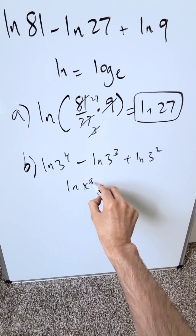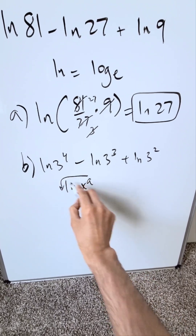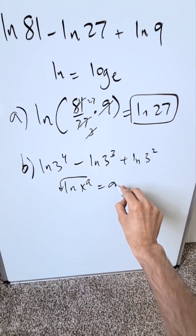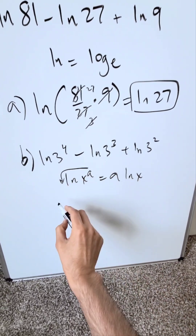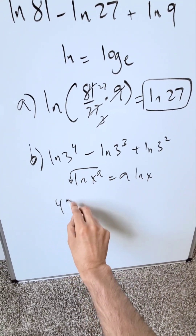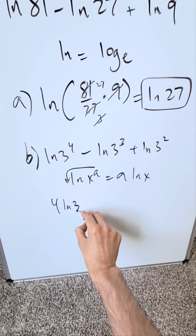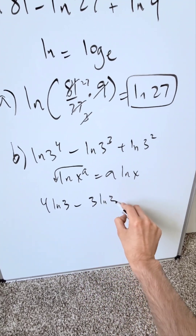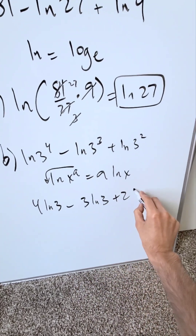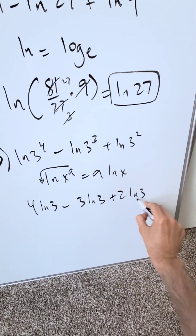Think of this property: natural log x to the power of a — you can bring the exponent out front to get a times natural log x. Applying that here, you have 4 natural log 3 minus 3 natural log 3 plus 2 natural log 3.